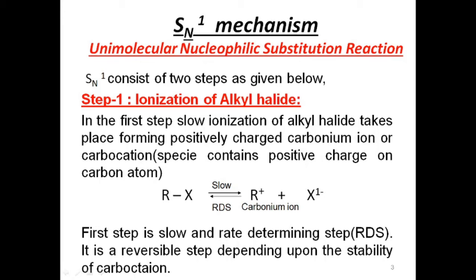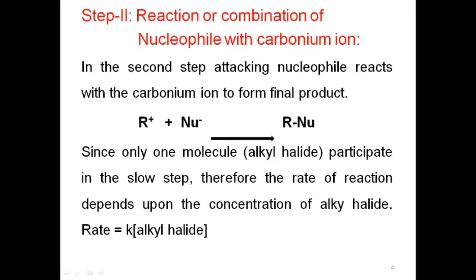The first step is a reversible and slow step. The slow step is the rate determining step — it determines the overall rate of the reaction. The second step is the reaction or combination of the nucleophile with the carbonium ion. The R⁺ (carbonium ion) attacks the nucleophile to form the final product.